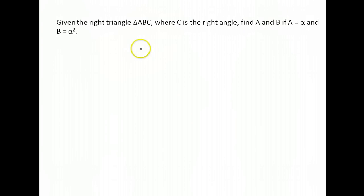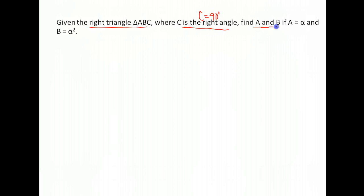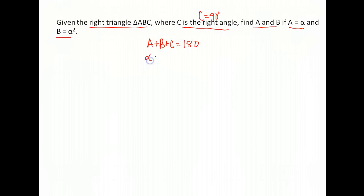Now we're going up one more notch. Similar setup — we still have a right triangle, C is a right angle, so C is 90 degrees. We're asked to find A and B, but this time A is alpha and B is alpha squared. We start the same way: A plus B plus C equals 180, so alpha plus alpha squared plus 90 equals 180.